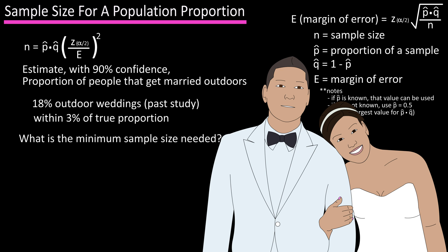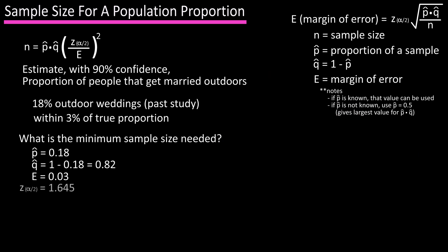Using our formula, p hat equals 0.18, or 18 percent, the point estimate for the proportion. q hat equals 1 minus p hat, so 1 minus 0.18, which is 0.82. E, the margin of error, is 3 percent, or 0.03, how accurate we want to be. z alpha over 2 for 90 percent is 1.645.